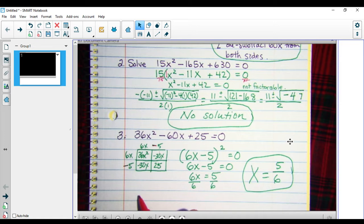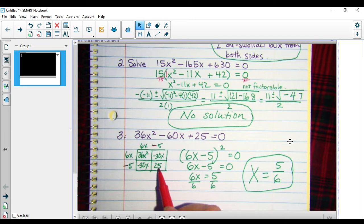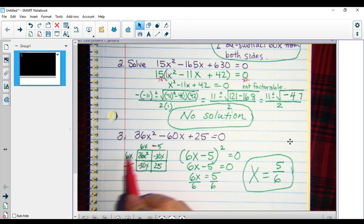Double check it. 36x squared, negative 30x, negative 30x, positive 25, 36x squared minus 60x plus 25. It works. And then I just write 6x minus 5 quantity squared equals 0.